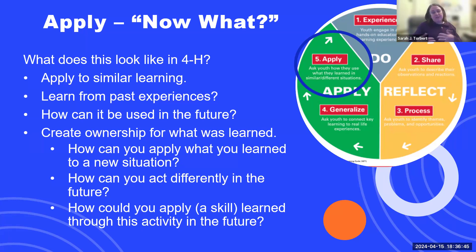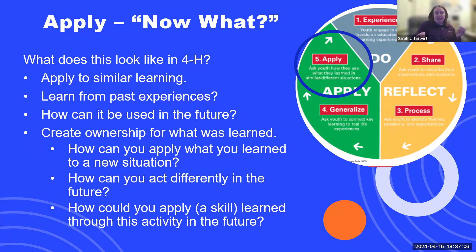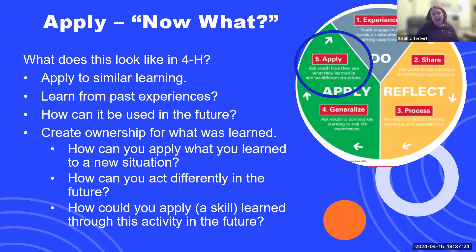There's a little quiz coming up. To review: the five parts are experience, share, process, generalize, and apply. The do is doing something. Sharing is talking about what you did. Reflecting is having members identify problems, opportunities, and themes. Generalizing is connecting to life skills and other parts of their life. And the apply is actually showing how it might work in a new situation. On the next slides there will be questions — your job in the chat is to identify which part each question represents.